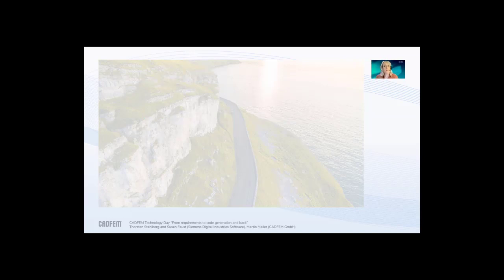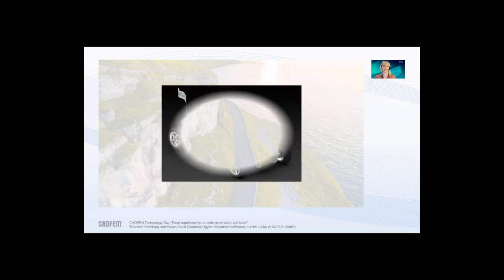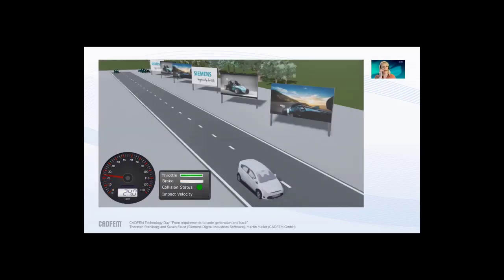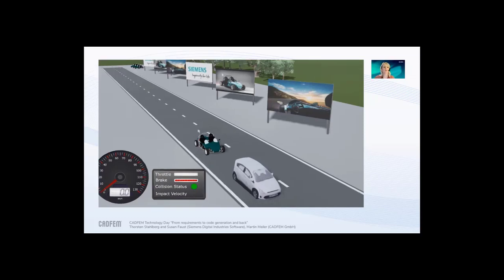We won't do this road trip in a normal car. We'll do it in a special electrical racing car — our E-Rod. This E-Rod is not only an electrical car; it is also partially an autonomous driving car. For example, we have already integrated a software function for the adaptive cruise control system into our E-Rod and have already started the full development process for this software function.